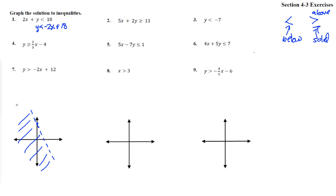Number 2. 5x plus 2y is greater than or equal to negative 11. Subtract 5x, and we get 2y is greater than or equal to negative 5x plus 11. Divide by 2, and let's write that down here.